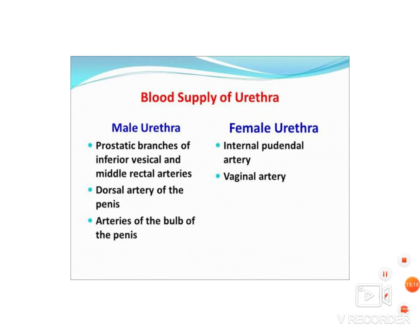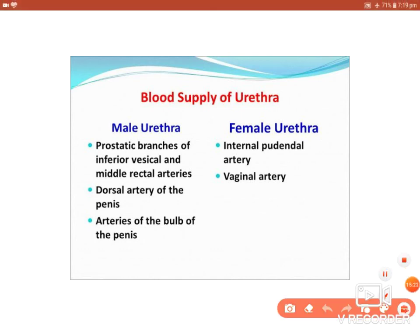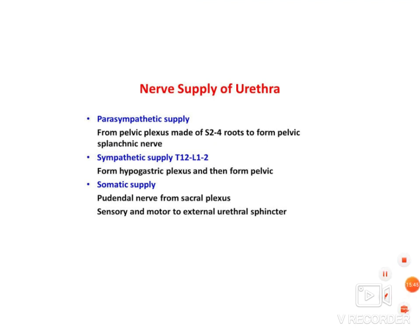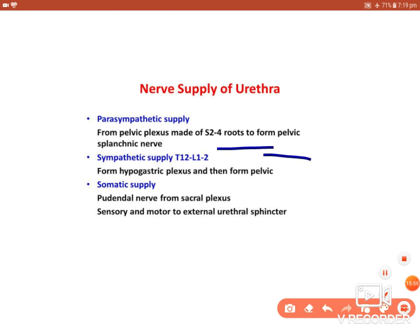The blood supply of the male urethra is mainly through the inferior vesical and middle rectal branches, along with the dorsal artery of the penis and the artery of the bulb of the penis. In the female it is supplied by the internal pudendal and vaginal arteries — all branches of the internal iliac artery. Nerve supply: parasympathetic via pelvic splanchnic nerves (S2-S4); somatic supply to the external urethral sphincter via the perineal branch of the pudendal nerve.